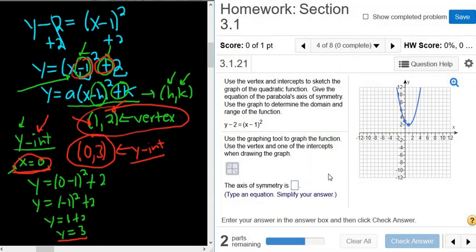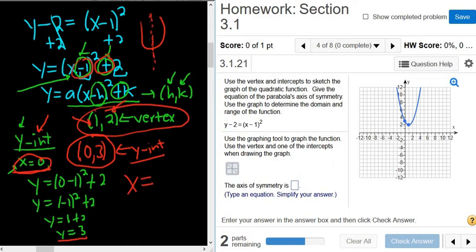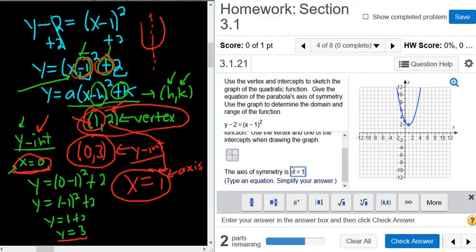The axis of symmetry. Okay, that's a vertical line that cuts it right in half. So if this is your parabola, the axis of symmetry is like this invisible dotted line that cuts it right in half. So it's always x equals whatever number you have here. So it's x equals 1. That's the axis of symmetry. And it's an equation, right? The equation of a vertical line is always x equals a number. So in this case, it's x equals 1. The homework does a really good job. It says type an equation.